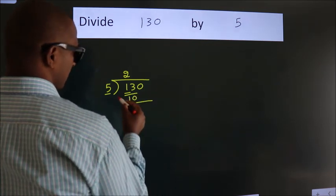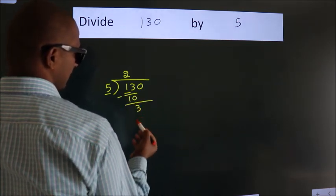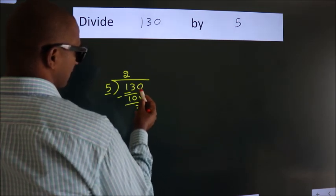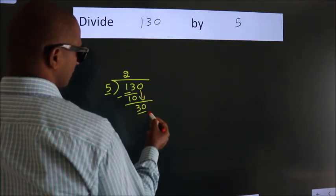Now we should subtract. We get 3. After this, bring down the beside number. So 0 down. So 30.